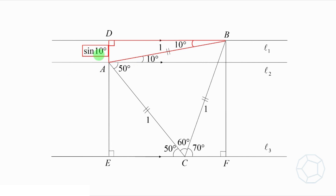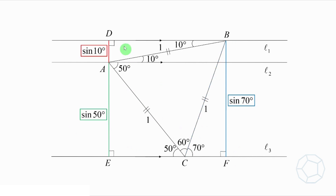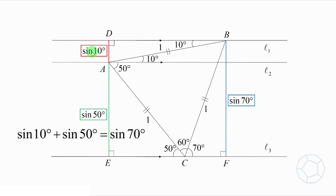Great, we get the first sine term. We use the same strategy to get sin 50 degrees and sin 70 degrees as well. In the green triangle at the bottom, AE is the opposite side of 50 degrees and the hypotenuse is also 1, so AE equals sin 50 degrees. By the same token, BF equals sin 70 degrees. Now, you can see that the lengths DE and BF are equal because the distance between the two parallel lines L1 and L3 is always constant. So we get the identity: sin 10 degrees plus sin 50 degrees equals sin 70 degrees.